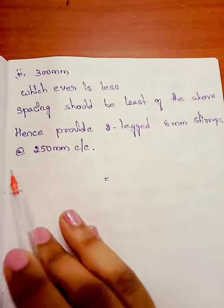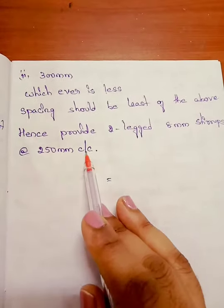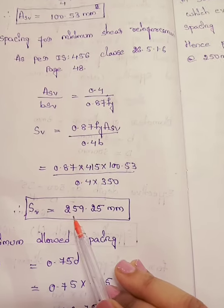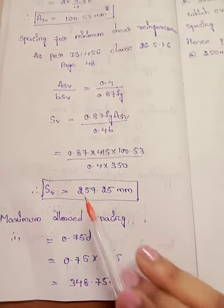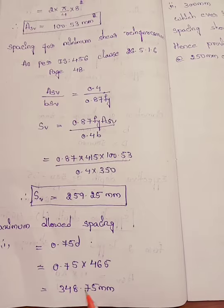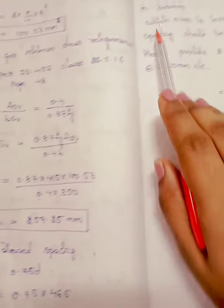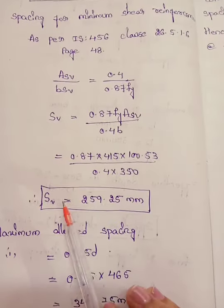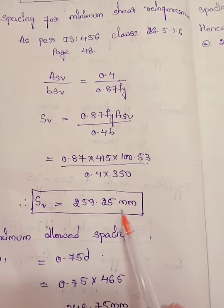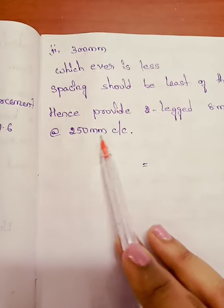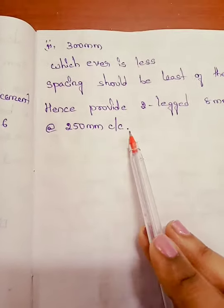Taking the least of the above values: the calculated sv = 259.25 mm, the limit 0.75d = 348.75 mm, and 300 mm. The least is 259.25 mm, so we provide two-legged 8 mm stirrups at 250 mm center to center, rounding down to the nearest practical value.